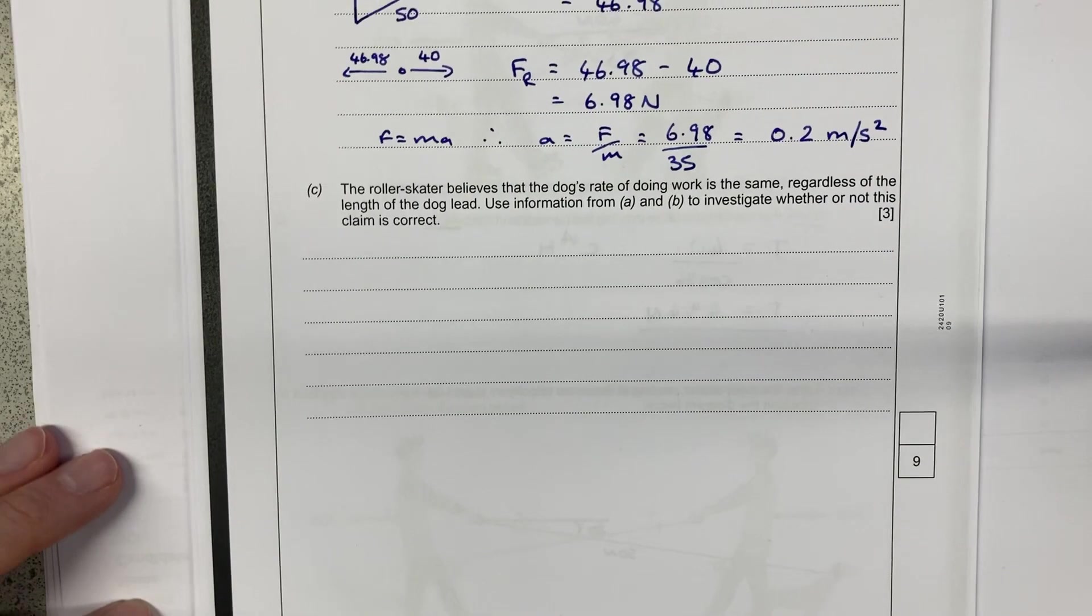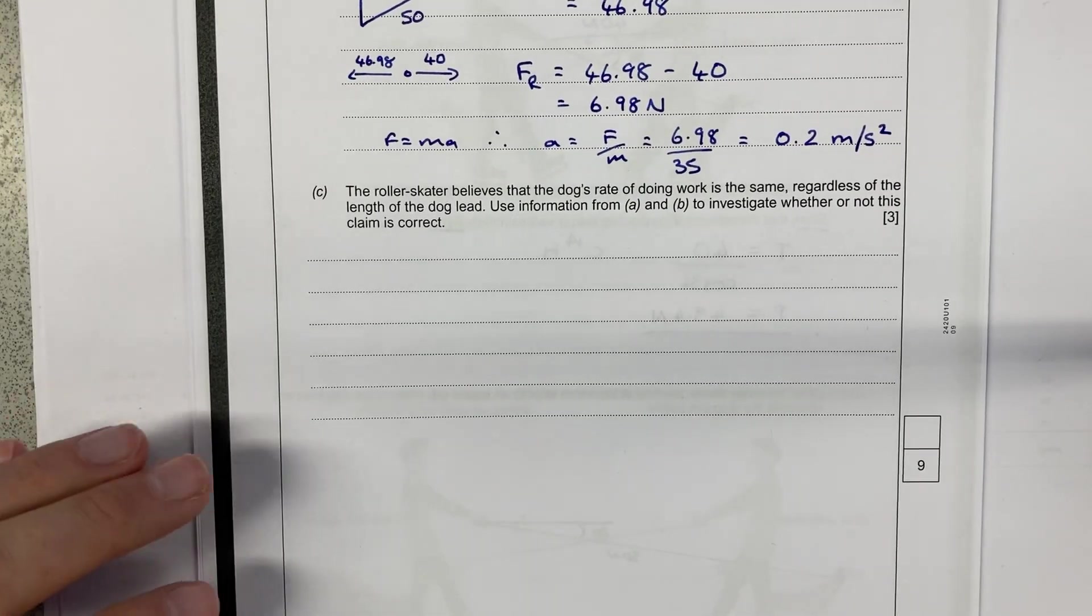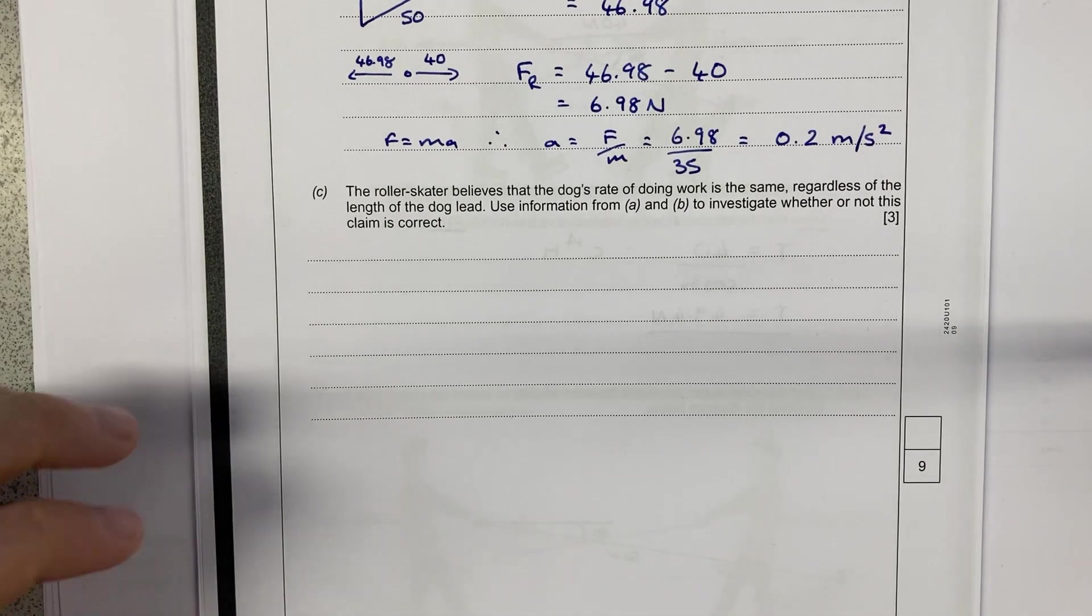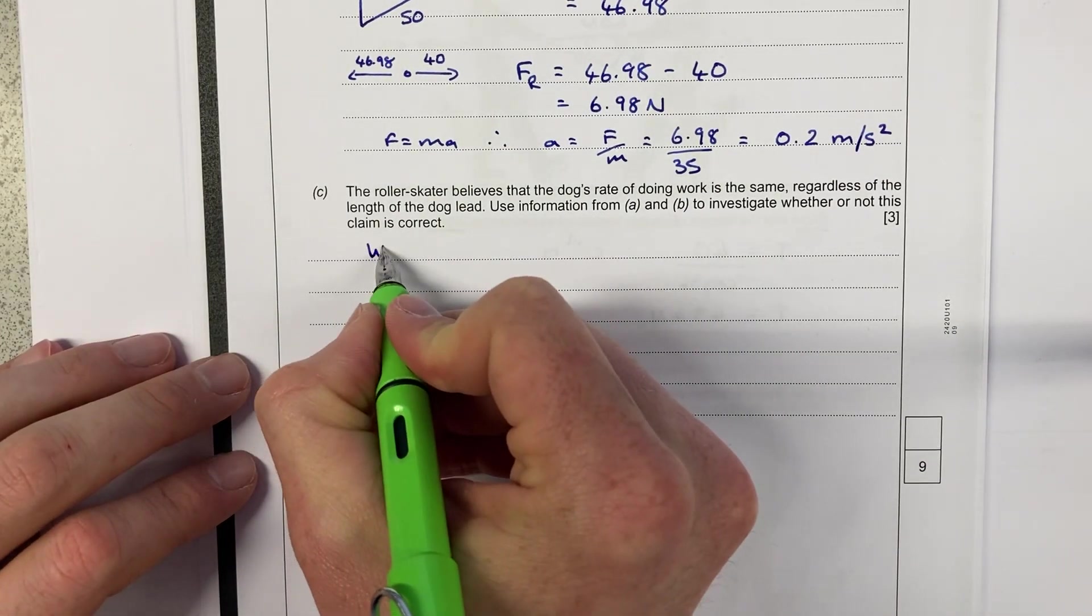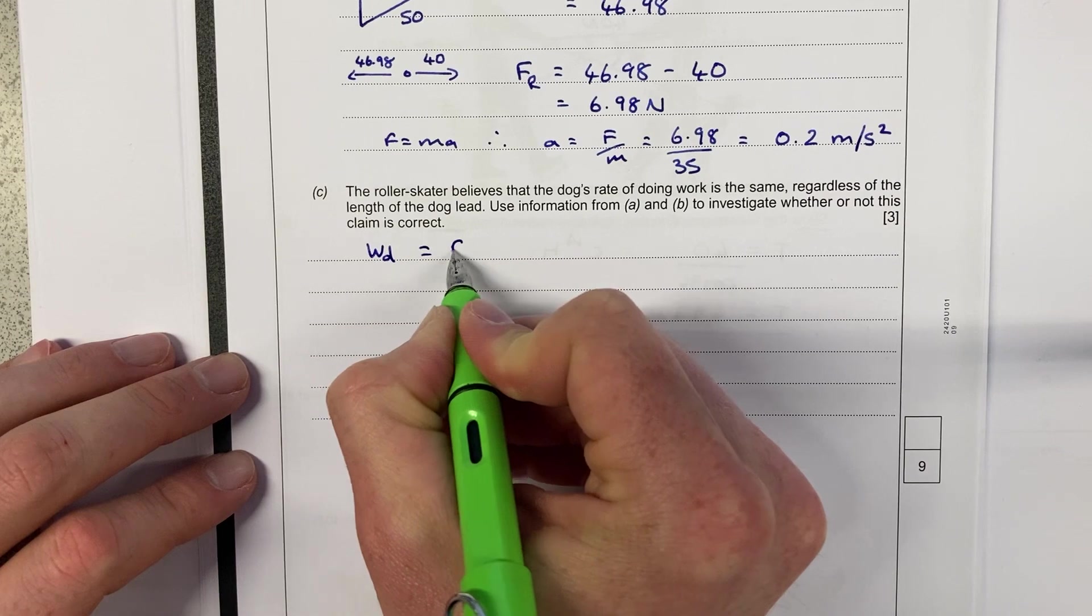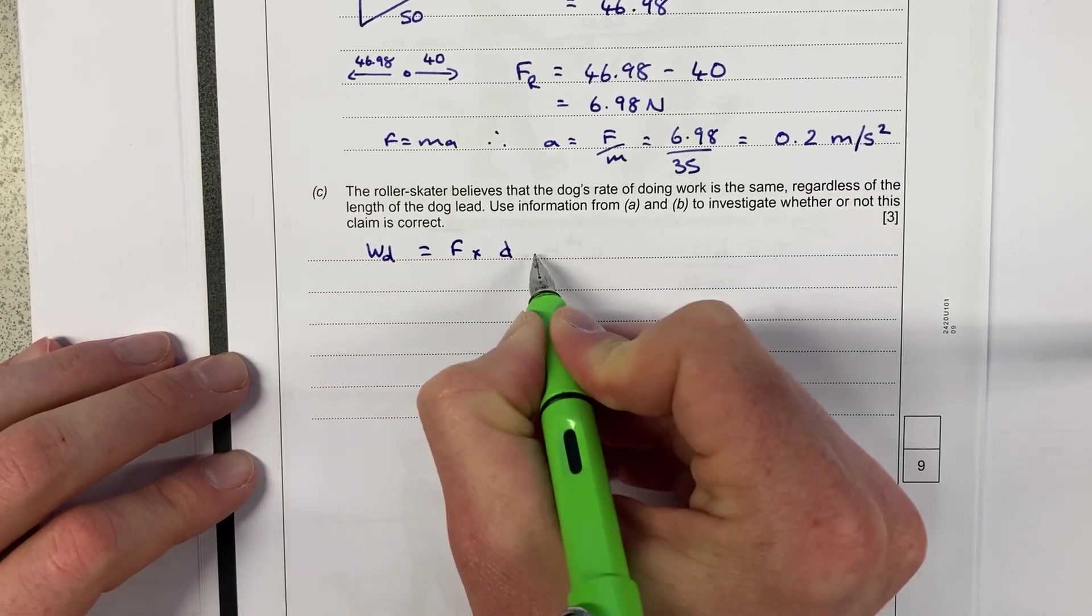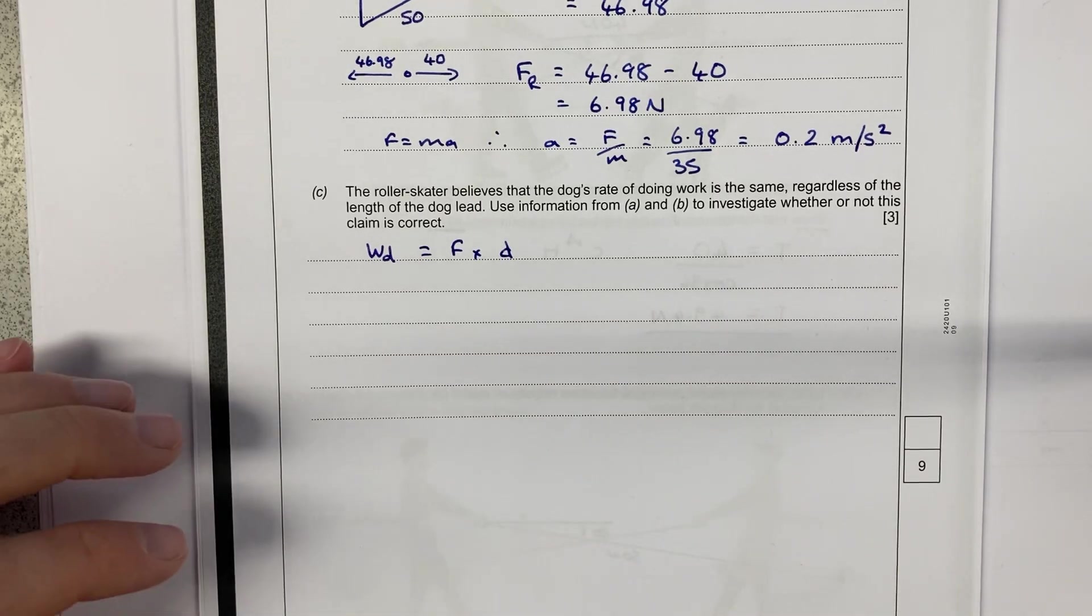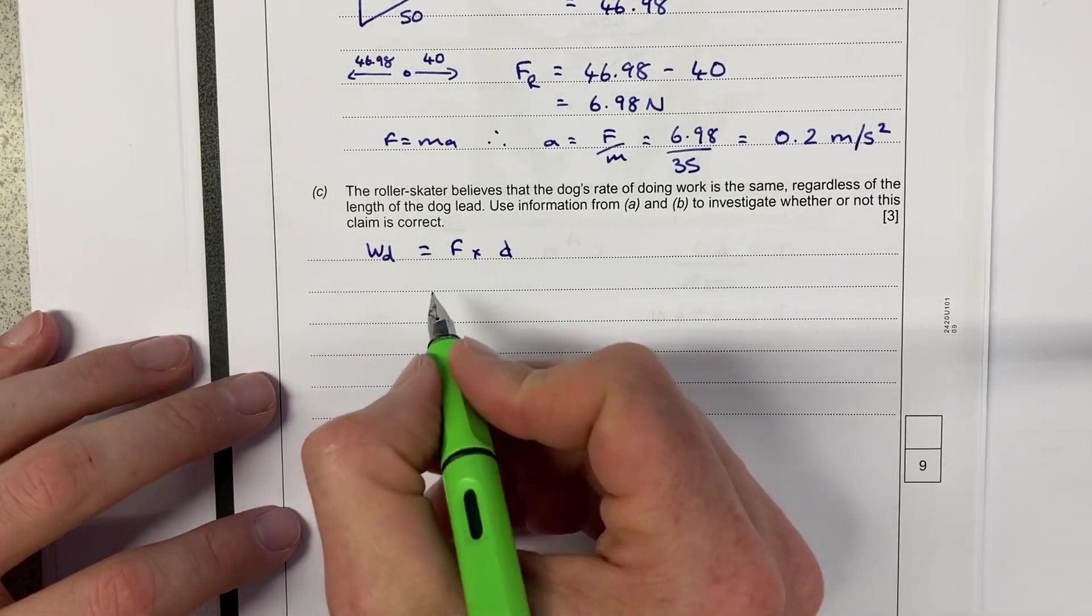And then rolling on into the last part of this question. The roller skater thinks that the dog's rate of doing work is the same regardless of the length of the dog's lead. Use the information to investigate whether or not this is true. So I would say that the work done, just to remind myself, is equal to force times distance in which the force is, or distance of movement in which the force is acting.